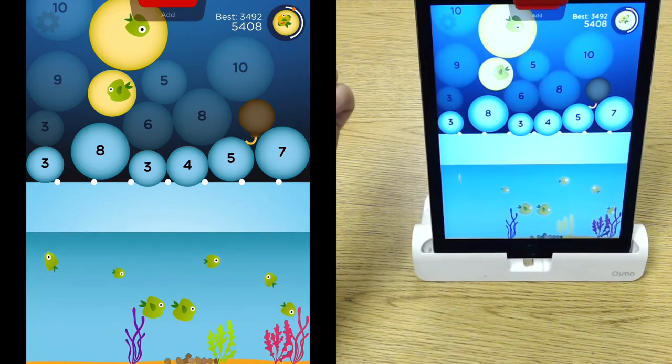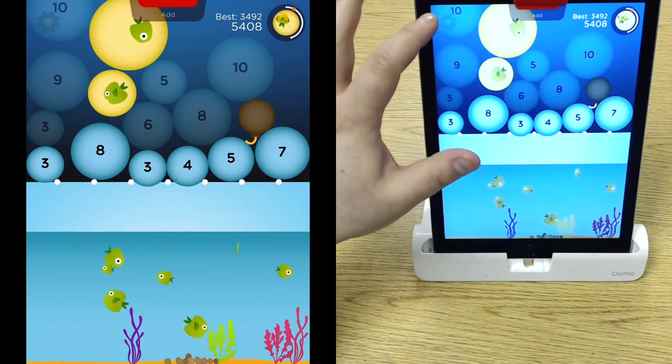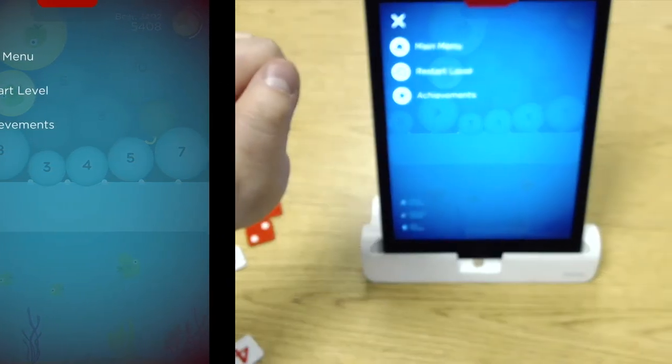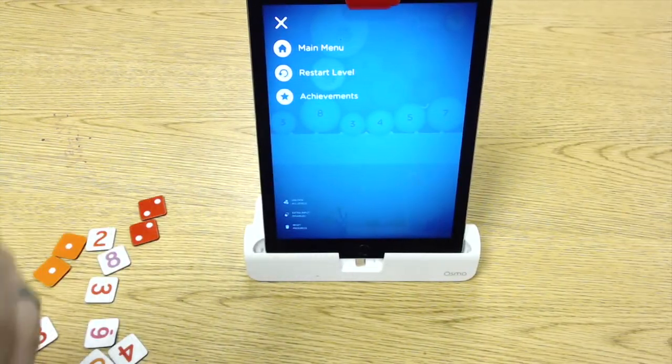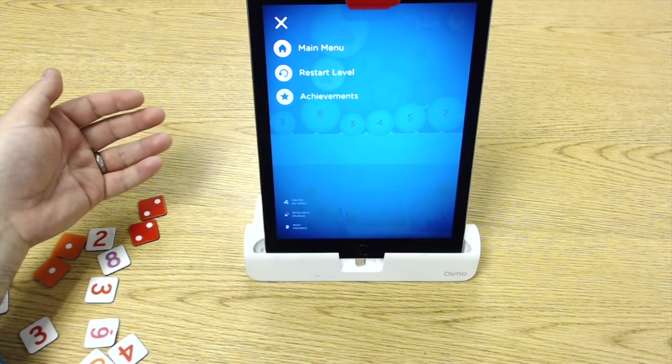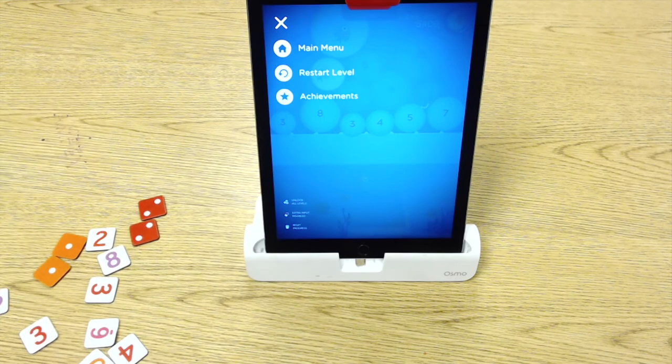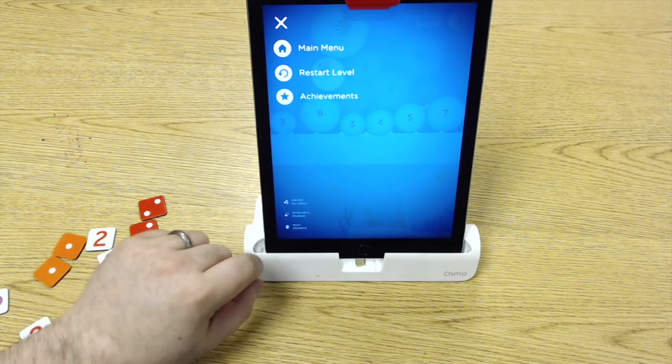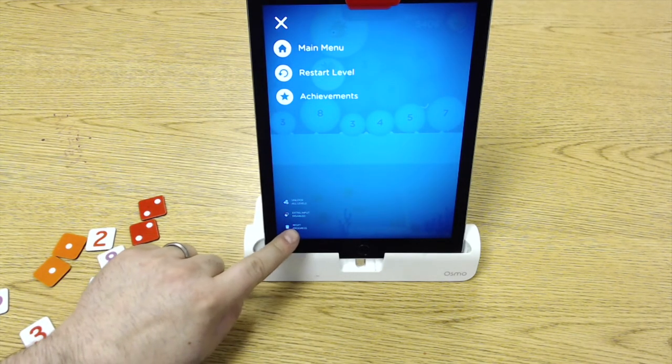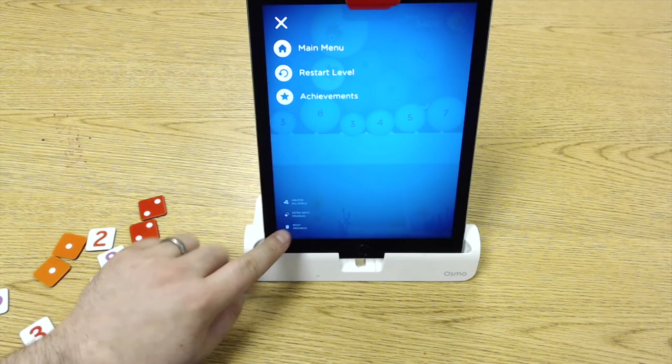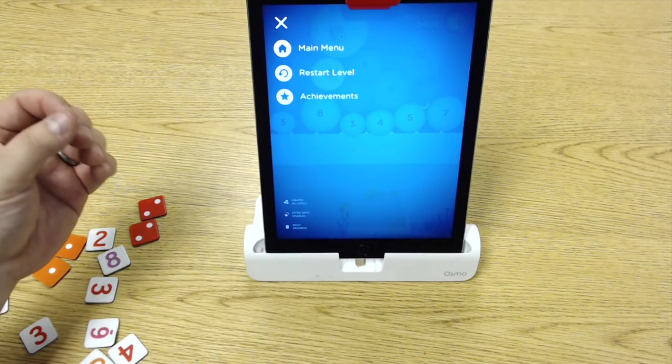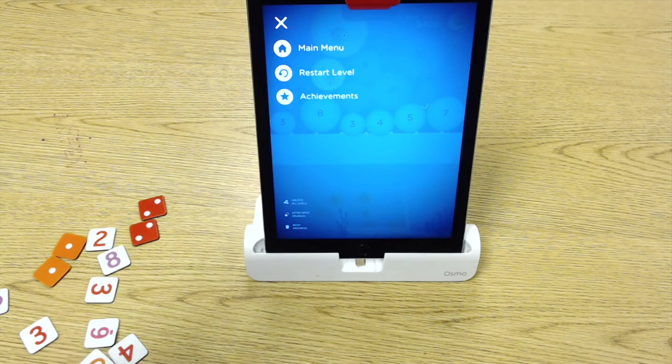Just like any of the Osmo games, if you go to that setting on the top left, if you decide that you want to reset the game, you're starting the year over again, new class, you can hit this reset progress, and it will go all the way back to the very first level of each concept.